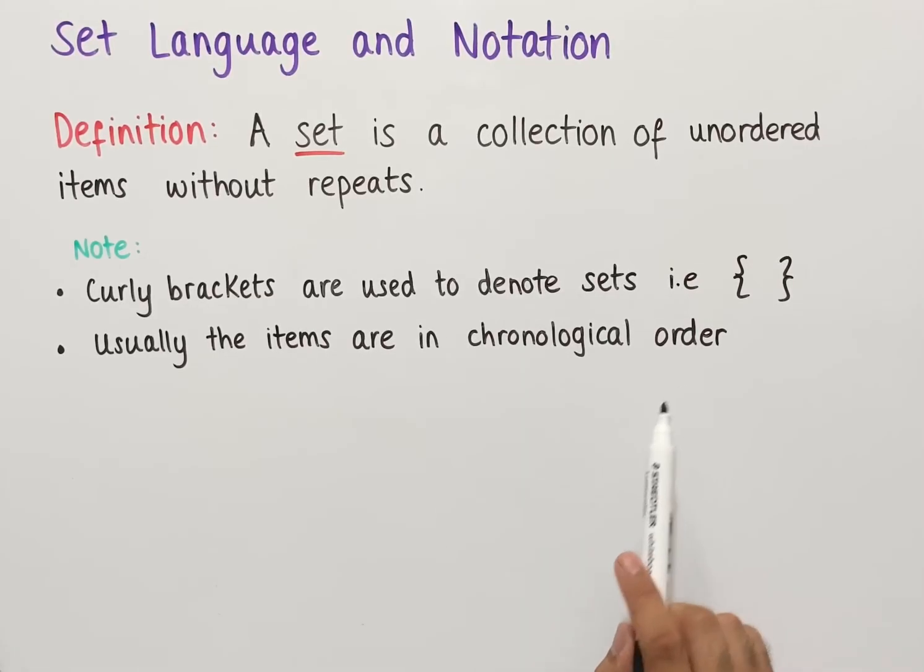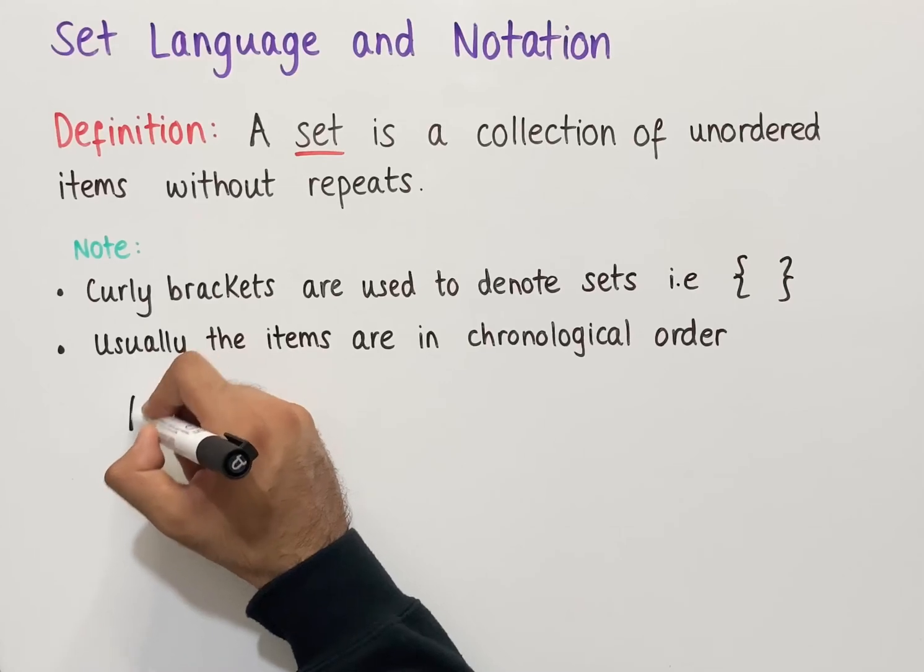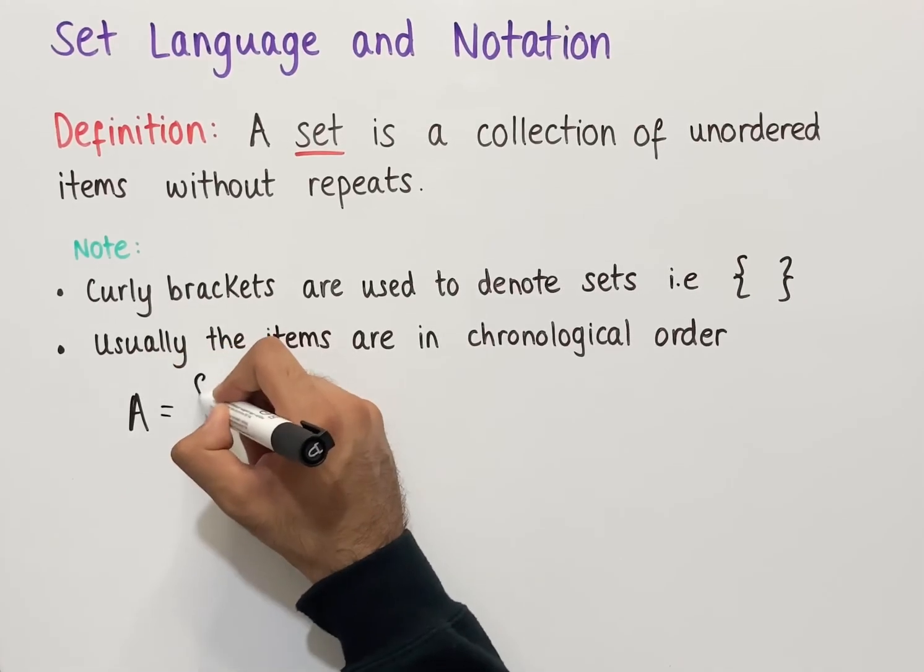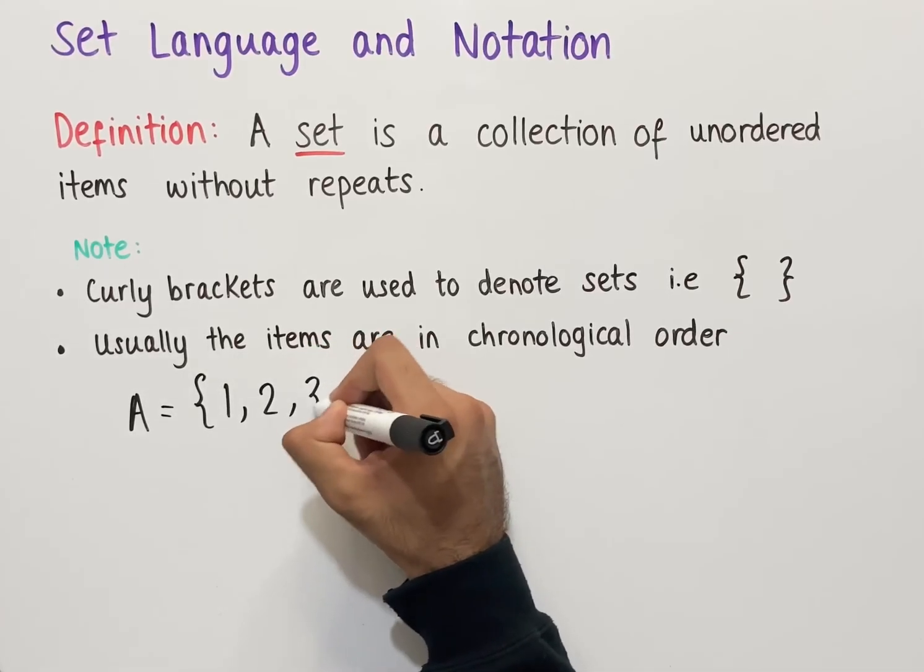This isn't necessary but this is the usual way that sets are written. If we look at some examples of sets, normally we call a set by a letter. For instance, the set A could be the set of the following numbers: 1, 2 and 3.